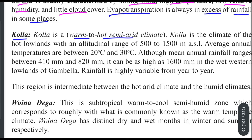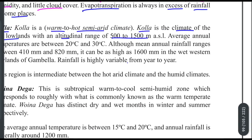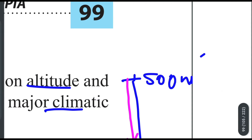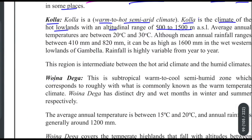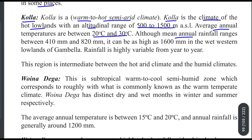The climate of the hot lowland is within an altitude range of 500 to 1,500 meters above sea level. The temperature range in this zone is between 21 and 32 degrees centigrade, with an average of around 30 degrees centigrade.